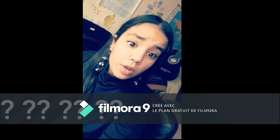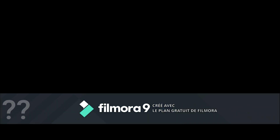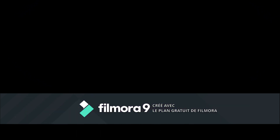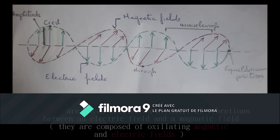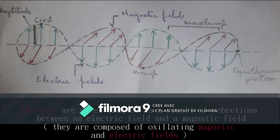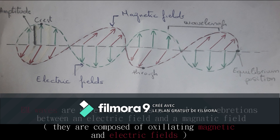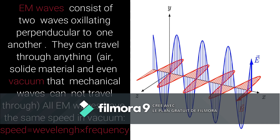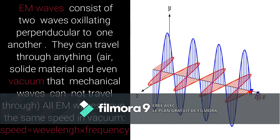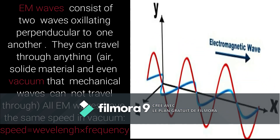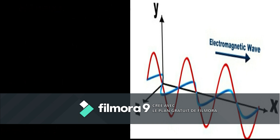What do we mean by electromagnetic waves? EM waves are waves created as a result of vibrations between an electric field and a magnetic field. EM waves consist of two waves oscillating perpendicular to one another. They can travel through anything such as air, solid material, and even vacuum, which mechanical waves cannot travel through. All EM waves have the same speed in vacuum.